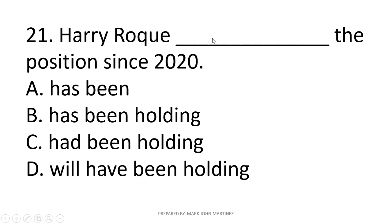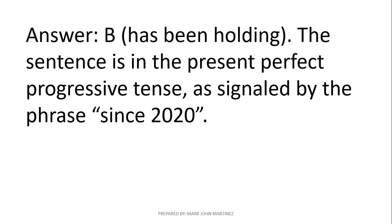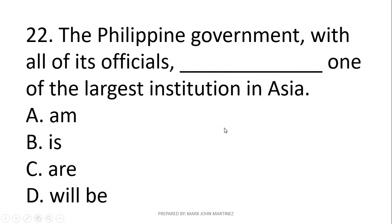Question: Harry Roque blank the position since 2020 — has been holding, had been holding, or will have been holding? Our clue is 'since 2020,' meaning up until the present Harry Roque is still holding the position. The correct answer is letter B: 'has been holding,' because the sentence is in the present perfect progressive tense as signaled by the phrase 'since 2020.'